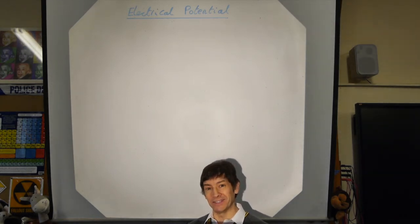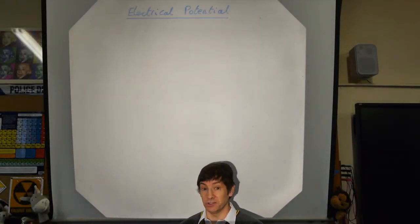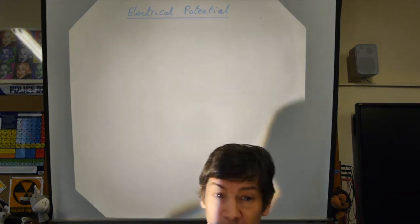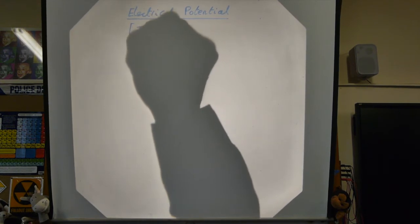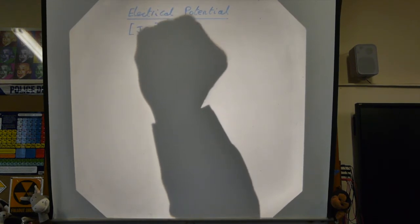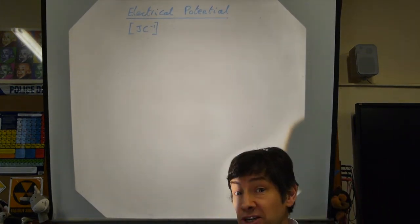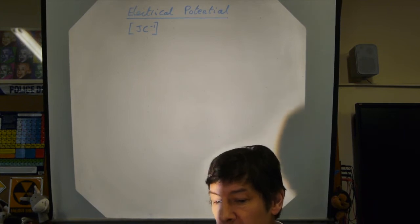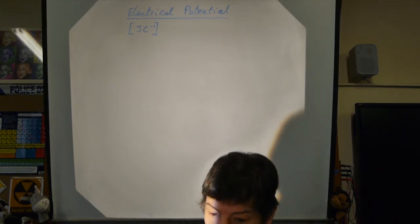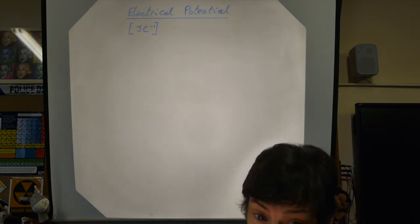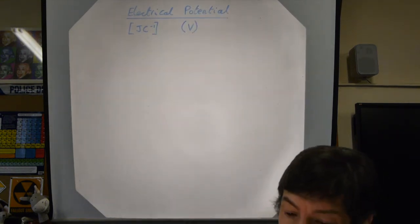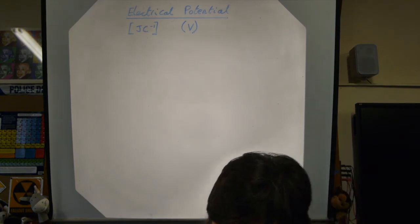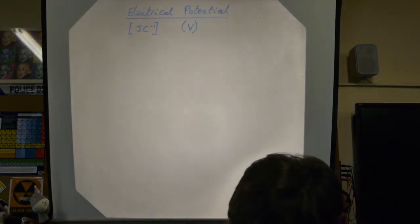Equipotentials aren't always on the syllabus but I think they'll bring all our ideas together. So: electrical potential. Be careful — we're talking about potential, not potential energy. This is measured in joules per coulomb. You might see the similarity with gravitational fields, which uses joules per kilogram. But joules per coulomb — think voltage.